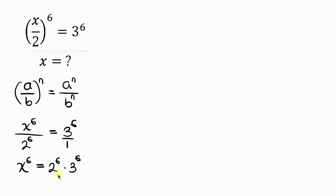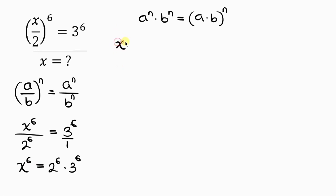Our next step will be to apply another law of indices which says: a to the n times b to the n — as long as they have a common power — can be grouped as (a times b) all raised to the n. Applying this, x to the 6 equals (2 times 3) all raised to the power 6.